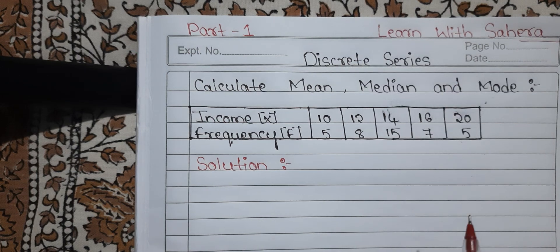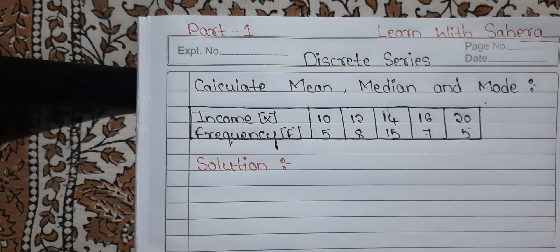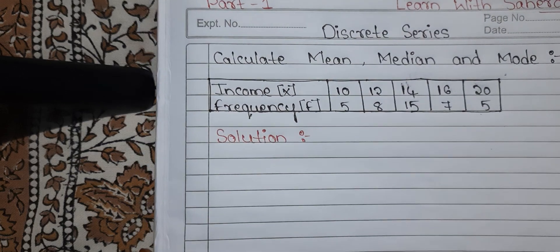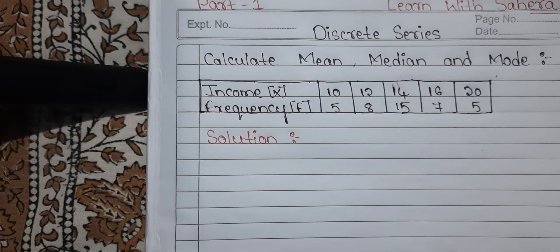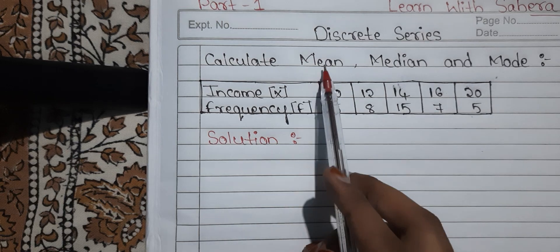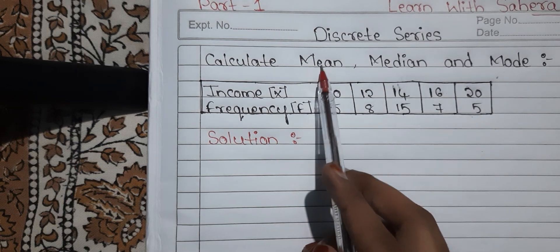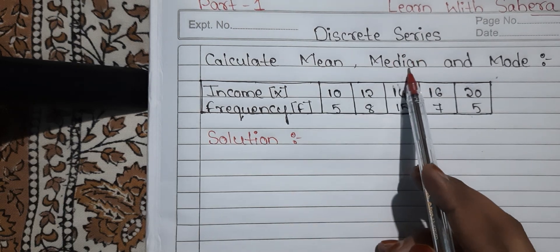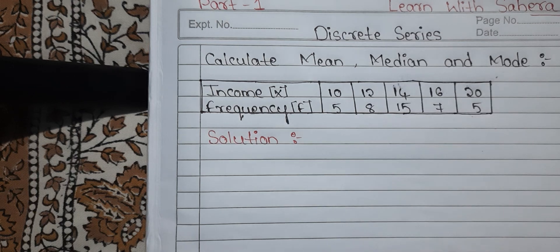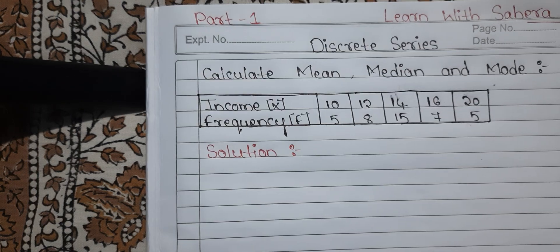I will be sharing my Instagram ID link in this video description also. So without getting late, let us get started with our discrete series calculation of mean, median and mode. First we will be calculating mean, then we will go with median, and last we will see mode.